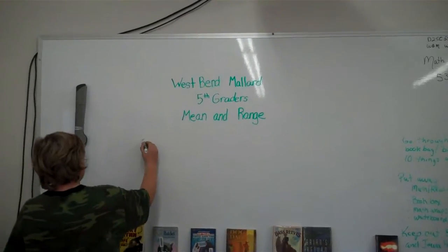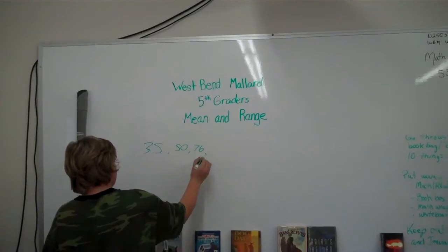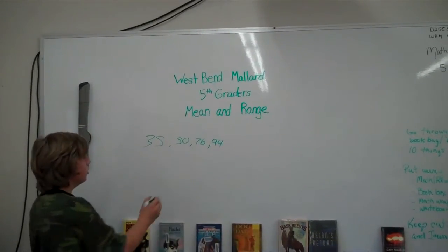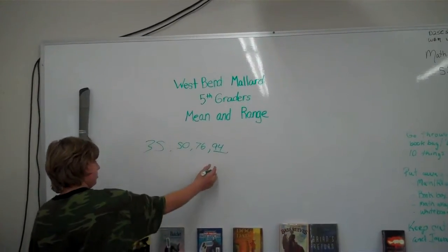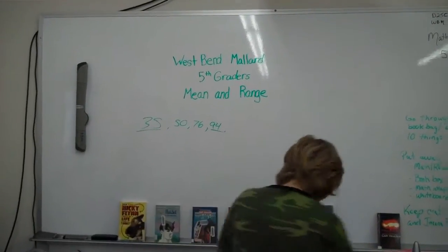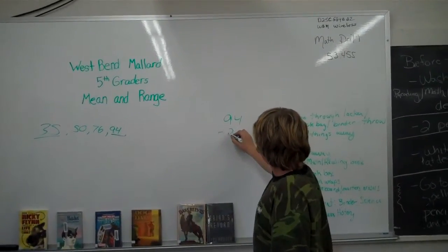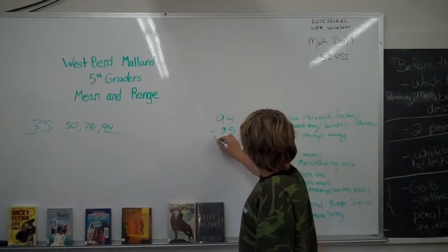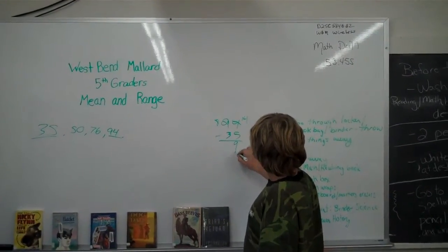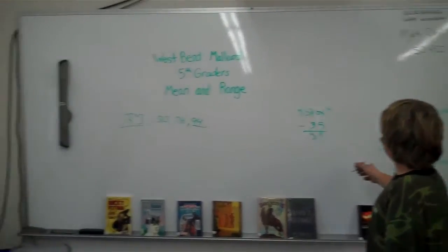So, put up 35, then 50, then 76, then 94. What's the biggest number? What's the lowest number? So, minus 94 from 35. The range of Ryan's yards is 59.